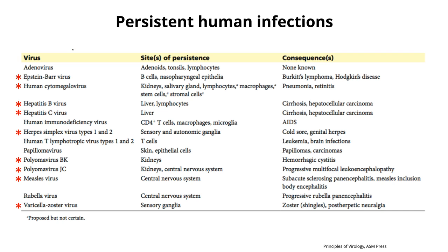We'll talk about the hepatitis viruses, and by the name alone you should know that the consequence is a liver disease called hepatitis. HIV we will talk about at the end of the course. Today we'll talk about herpes simplex viruses type 1 and type 2. We'll talk about some polyomaviruses, which are in all of us but don't seem to cause any disease unless you are immunosuppressed — and then you have some serious disease. And we'll talk about varicella zoster virus.